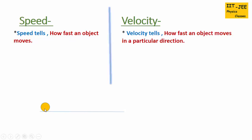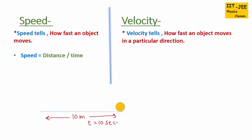Suppose this object travels 10 meters in 10 seconds. The formula of speed is distance over time. So the speed of this ball would be 10 meters divided by 10 seconds, which equals 1 meter per second. Speed tells us how much distance an object moves in 1 second.